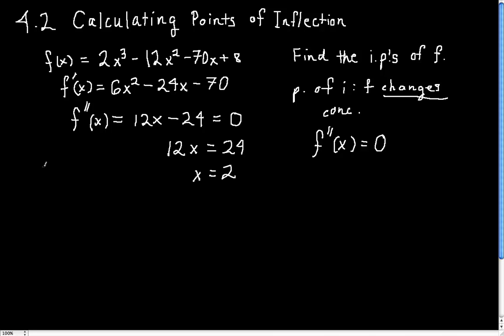So we can make a sign chart for f double prime. We notice that at x equals 2, it's zero, and to the left, it's negative, and to the right, it's positive. And this is essential for something to be a point of inflection. It has to change, in this case, from concave down to concave up.